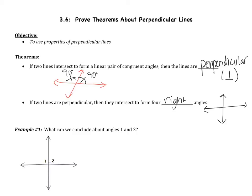Let's have some lines that are perpendicular. You know they're perpendicular because of the right angle. Now I only have one right angle marked, but in reality all four of those angles are right. So in reality this is a right angle, this is a right angle, and that is a right angle. That's what that theorem says.